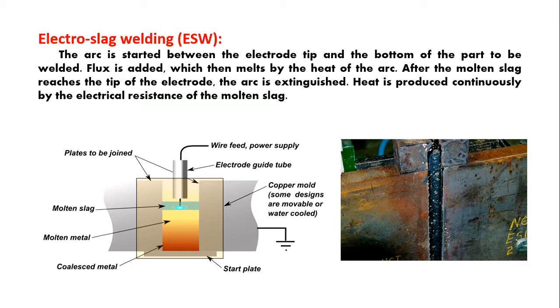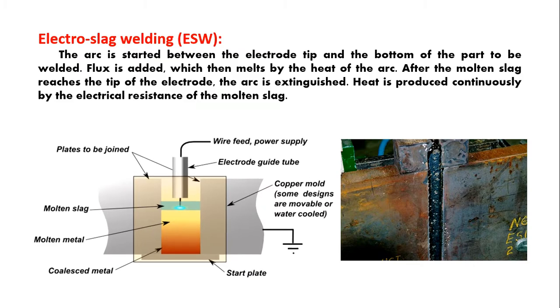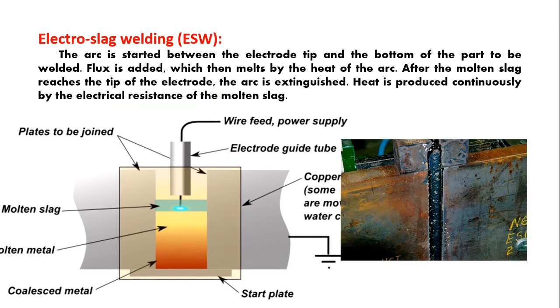In this process we are using consumable electrode and continuously feeding that electrode through electrode guide tubes so that it maintains the electric arc constantly throughout the process. As shown in the figure, there are two pieces of materials going to be joined. In between, the molten metal is made and slag is always floating on the top. You can see the arc is created with the molten slag.